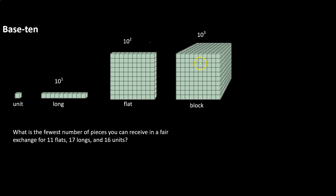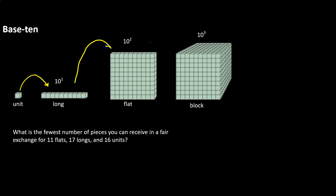And then lastly we have a block. A block is made up of 10 flats. So if you count the squares that go to the depth of this block, we can see that there are 10. A base 10 system says when you have 10 units, we don't say 10 units — we call it a single long. If you have 10 longs, you say you have a flat. If you have 10 flats, you say a block. It's almost like exchanging your money so that you can have the fewest number of bills possible.